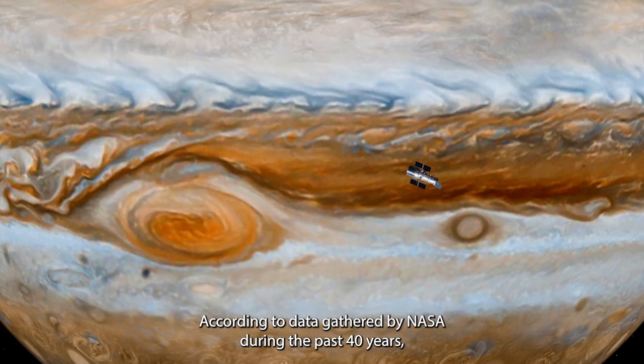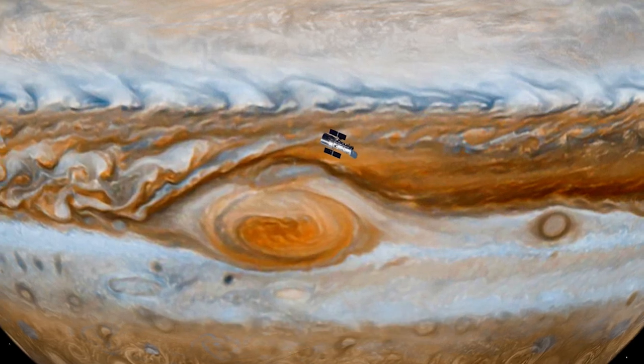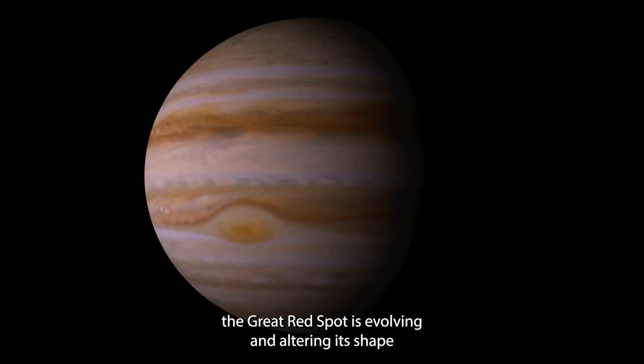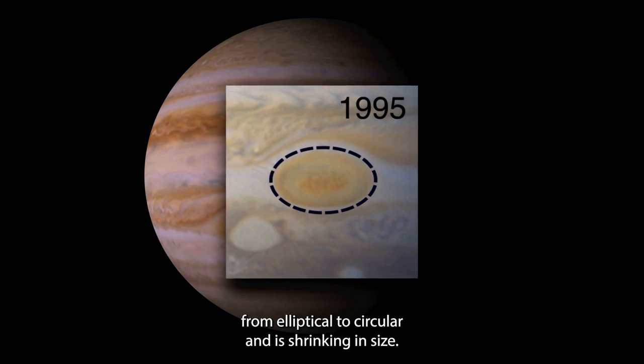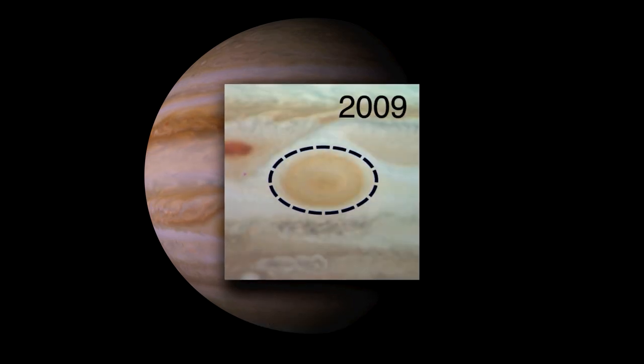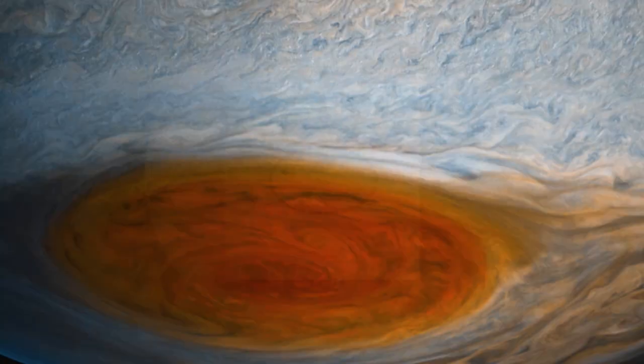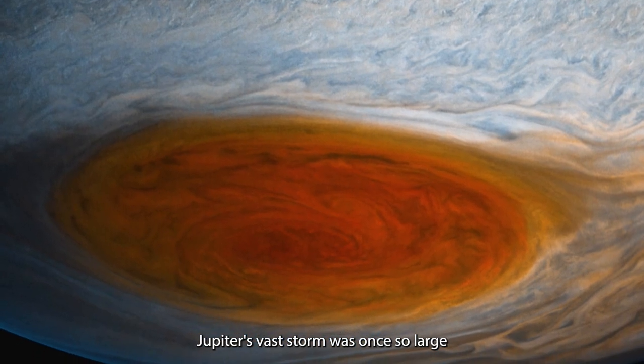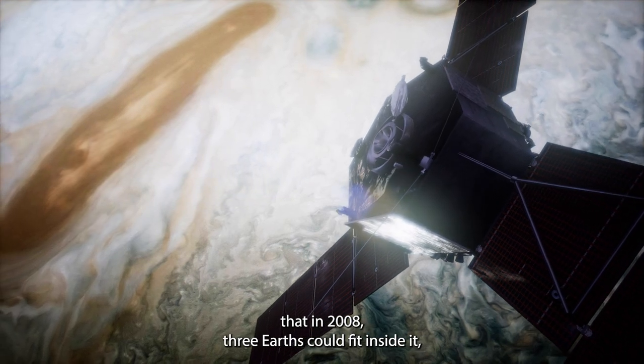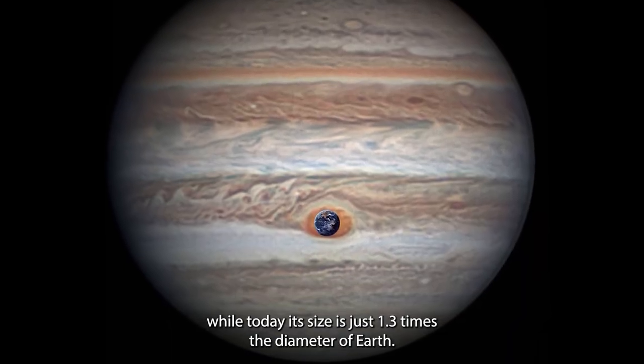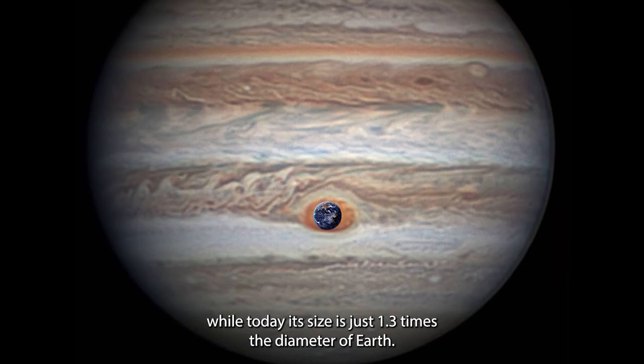According to data gathered by NASA during the past 40 years, the Great Red Spot is evolving and altering its shape from elliptical to circular and is shrinking in size. Jupiter's vast storm was once so large that in 2008, three Earths could fit inside it, while today, its size is just 1.3 times the diameter of Earth.